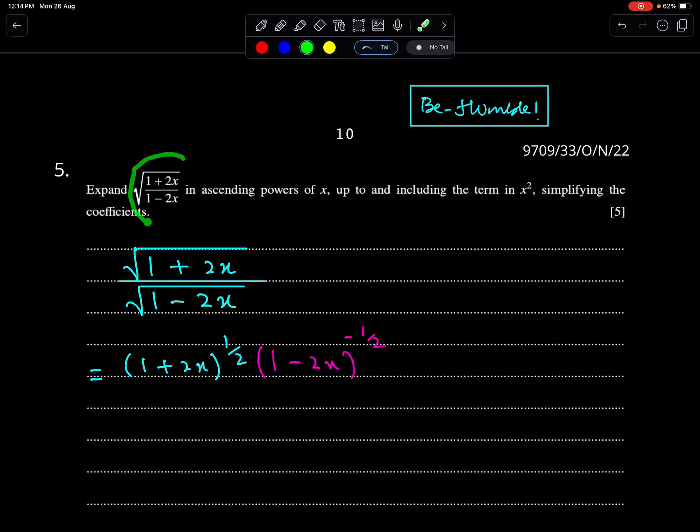This is one of the most important questions of binomial expansions. Expand (1+2x)/(1-2x) raised to 1/2 in ascending powers of x up to and including the term in x squared, simplifying the coefficients.